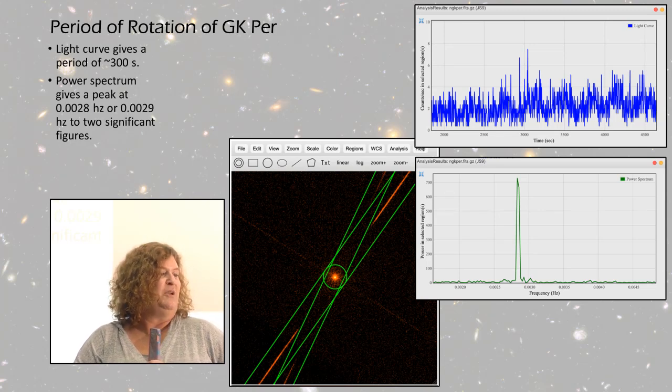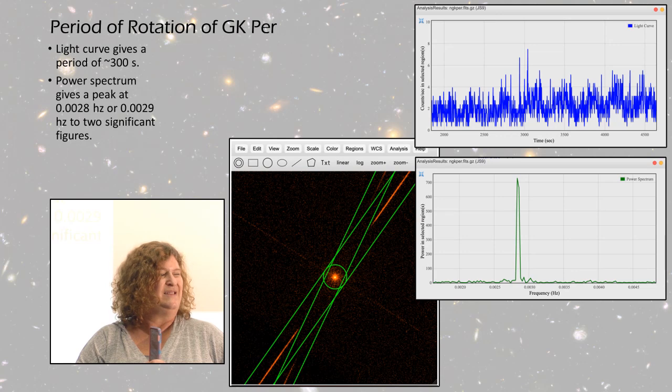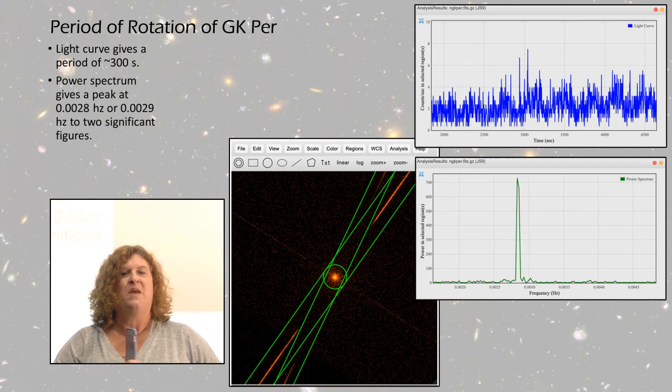If you look at the light curves, the light curve of GK Per, there's definitely a lot of noise in there. But you can see it's about 300 seconds if you look at the overall trend.